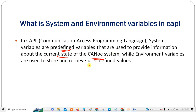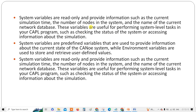One thing to remember: in system variables, you can't set user-defined values — they are only system-defined. For example, vehicle speed is a system variable you can't modify, but maximum speed can be set as a user-defined value in an environment variable. Similarly, calibration values can be set in environment variables but not in system variables.